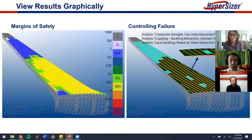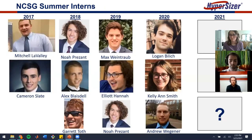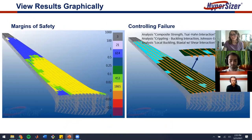The margins of safety also show areas where the structure is likely to experience failure. It's also able to give you data as to where on the structure you're liable to experience different types of failure, and you can actually use that to further design your structure.